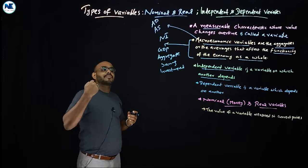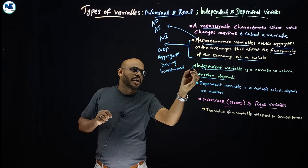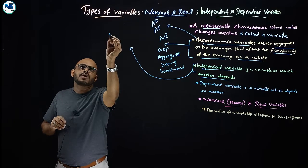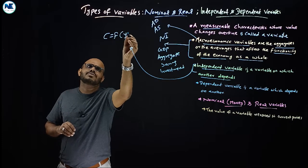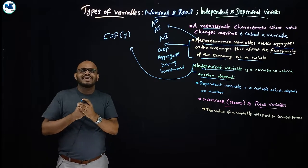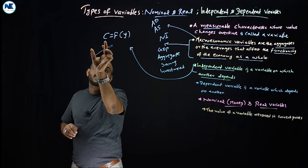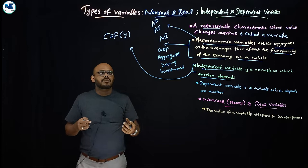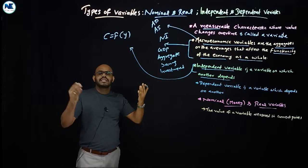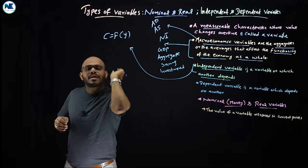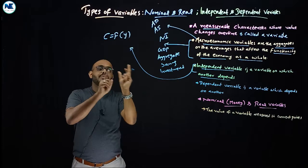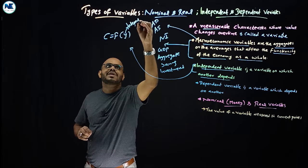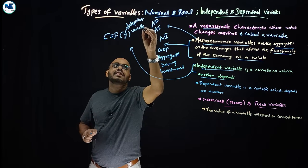For example, in macroeconomics we have the consumption function: C is equal to a function of Y — a very common and simple topic. In the consumption function, income Y is the independent variable. Consumption depends on income — a consumer's spending depends on their income level — so income Y is the independent variable.